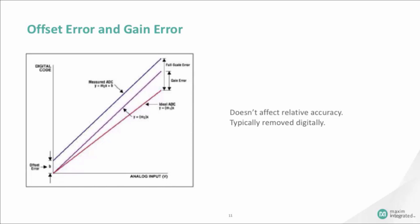The gain error of an ADC indicates how well the slope of an actual transfer function matches the slope of the ideal transfer function. Gain error is usually expressed in LSB, or as a percentage of full-scale range, or FSR, and it can be calibrated out with hardware or calibrated in with software. Gain error is the full-scale error minus the offset error.